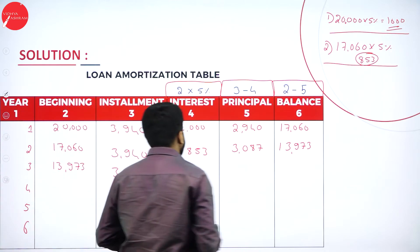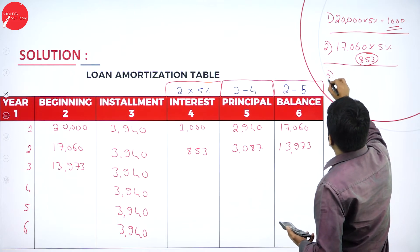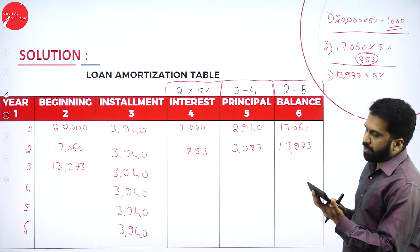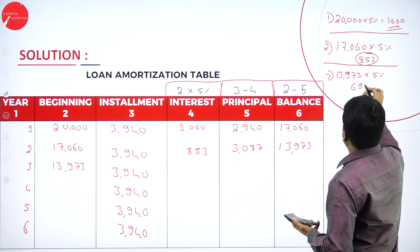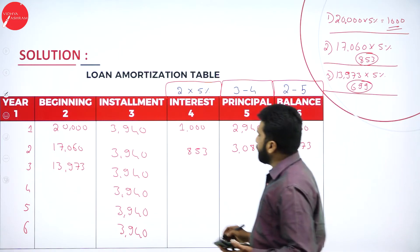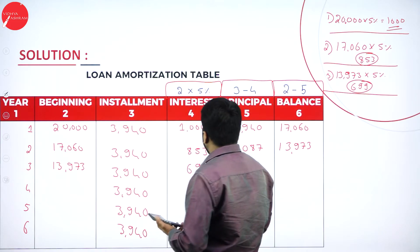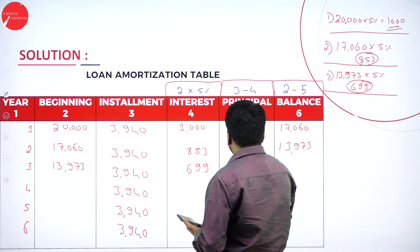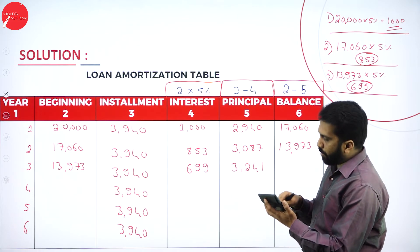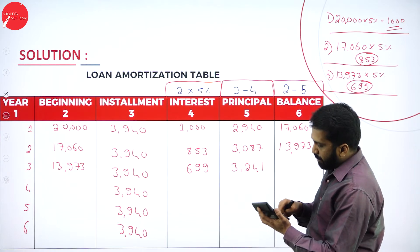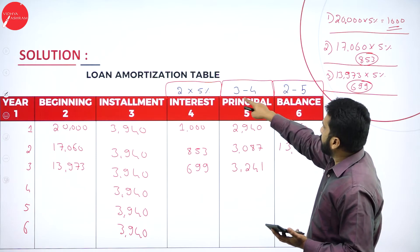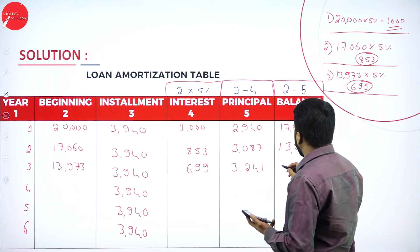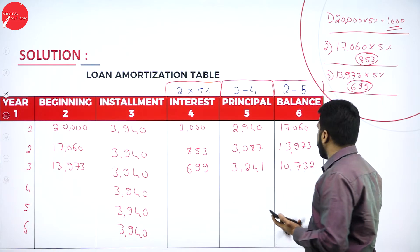For year 3: 13,973 multiplied by 5% gives 699. So the interest is 699. Principal: 3,940 minus 699 gives 3,241. Balance: 13,973 minus 3,241 gives 10,732. I am following the same formula throughout — column 2 multiplied by 5%, column 3 minus 4, and column 2 minus 5.